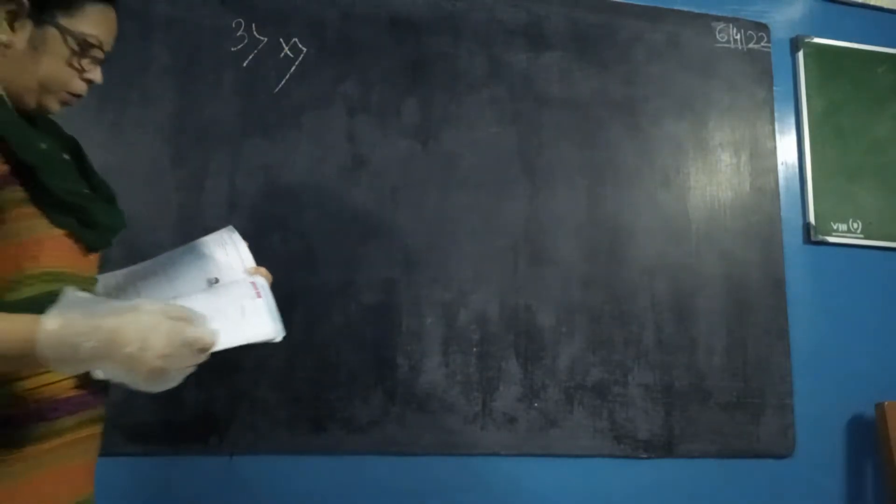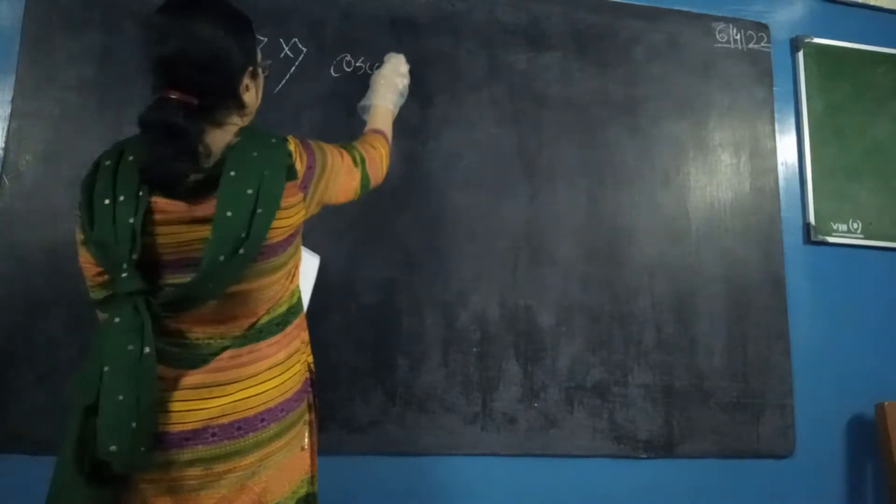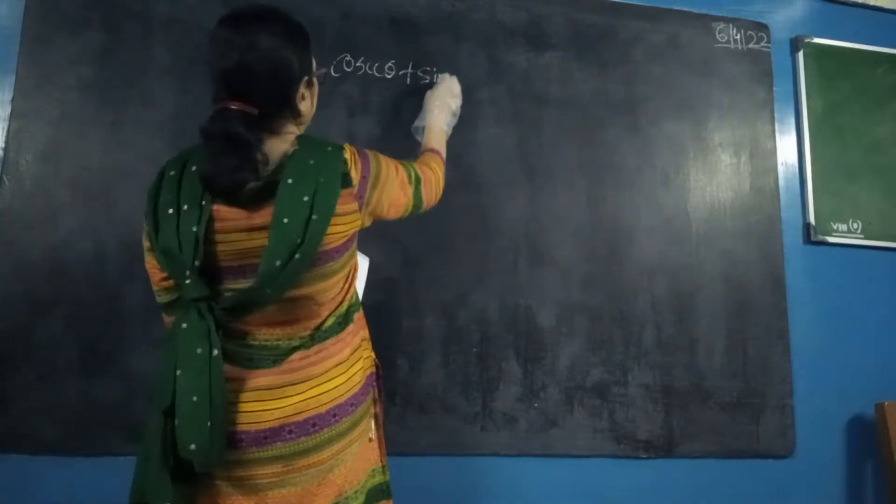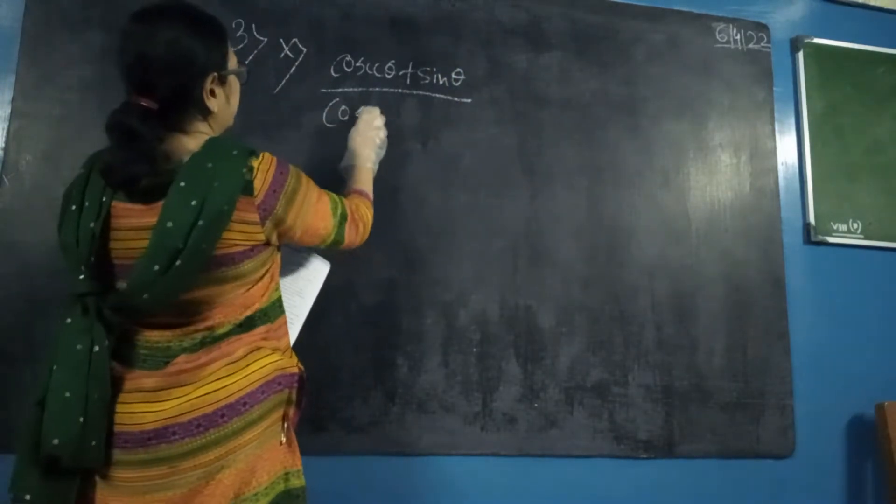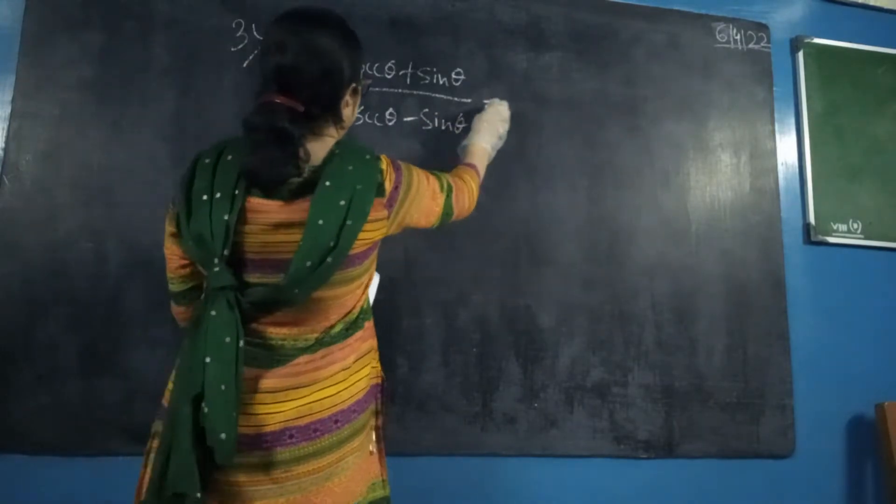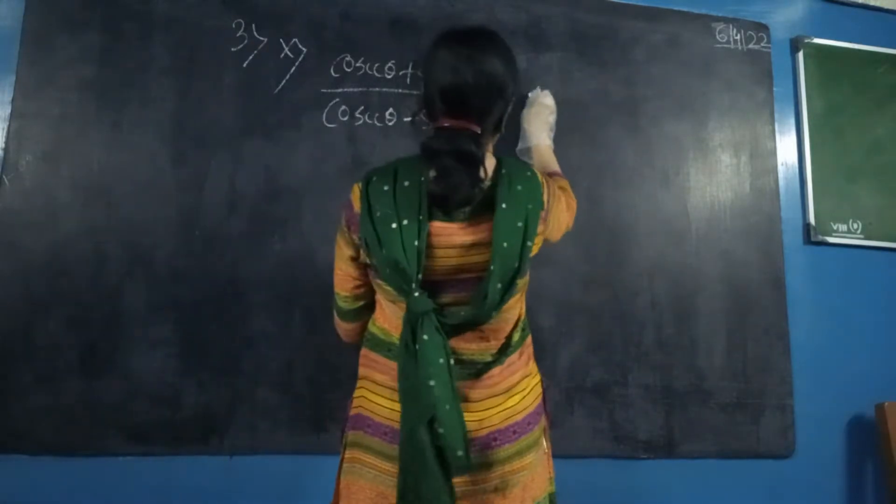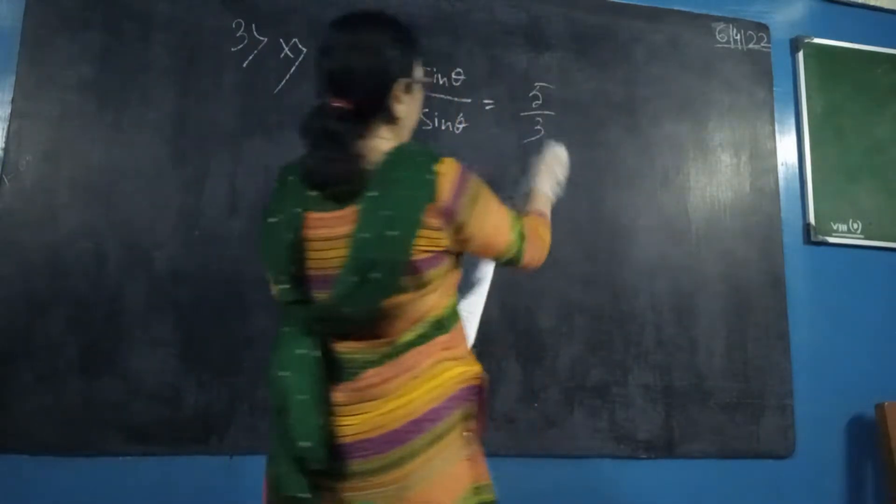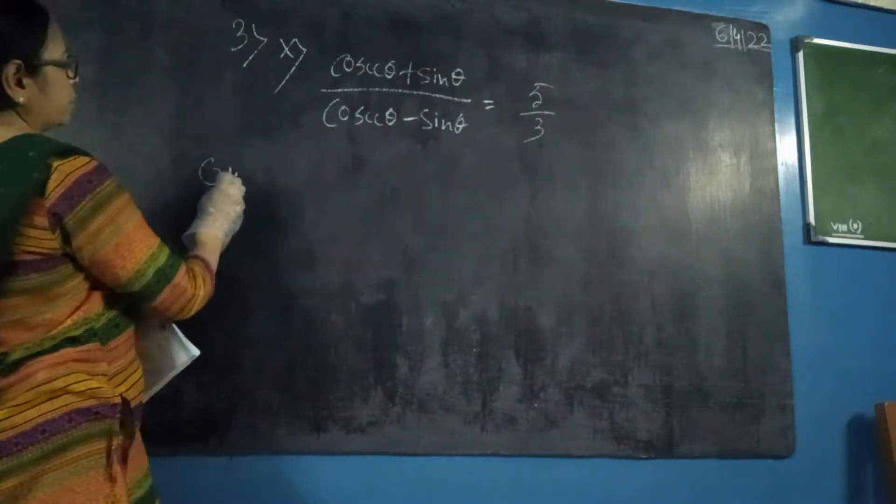It is given cosine theta plus sine theta by cosine theta minus sine theta equals to 3. Calculate the value of sine theta. So here again we need to cross multiply and solve.